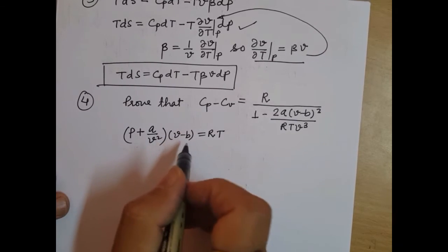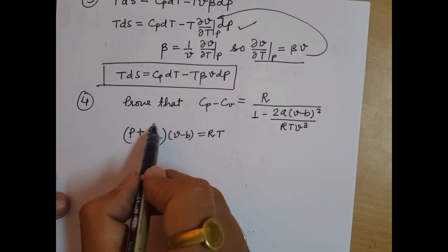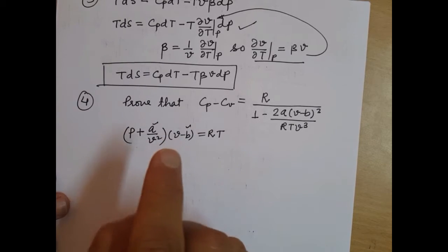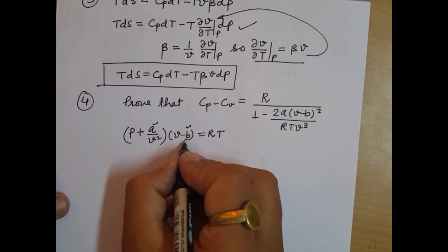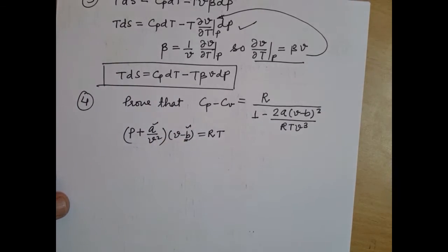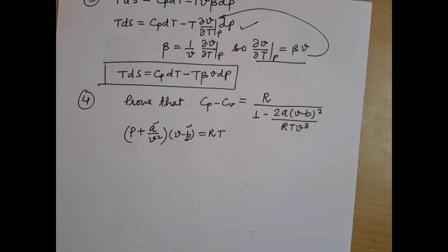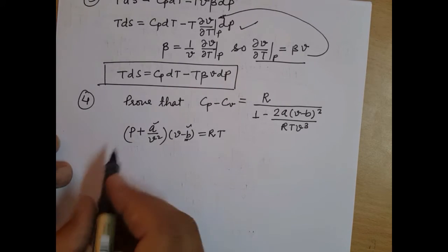Here, A and B have specific meanings. B represents the volume occupied by the individual molecules of the gas. And A tells us about the interaction of molecules, that is, the cohesive forces, which we generally neglect in the case of an ideal gas.